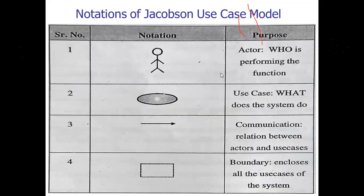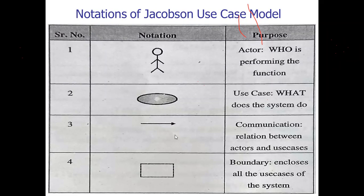The notations for the Jacobson use case model include: the actor notation, representing who is performing the function; the use case notation, representing what the system does; the communication notation, showing the relation between actors and use cases; and the boundary notation, which encloses all the use cases of the system.